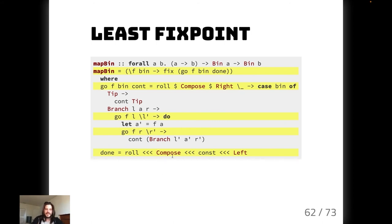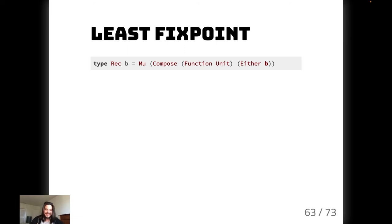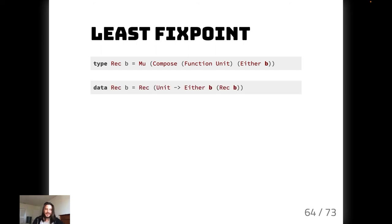In some ways this is a lot nicer to use. Can we go even further? We had that direct style with just bindings. If we take our type alias and make it `Rec`, it's `Nu (Compose (Function Unit) (Either B))`. Let's inline that and get rid of the functor-ness: `Rec B` is equal to `Rec (Unit -> Either B (Rec B))`. So we get this recursive data type that recurses on itself — that's why we have `newtype` here.